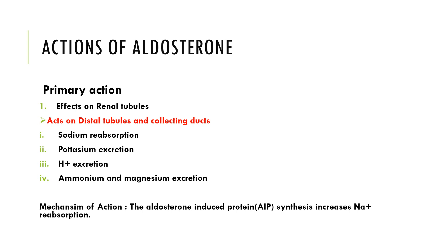The actions of aldosterone include primary and secondary actions. The primary action is its effect on renal tubules — it acts on the distal tubule and collecting duct. The effects include: sodium reabsorption, potassium excretion, hydrogen ion excretion, and ammonium and magnesium excretion.